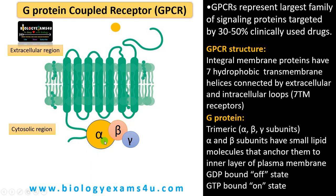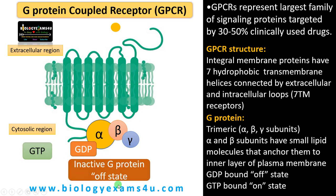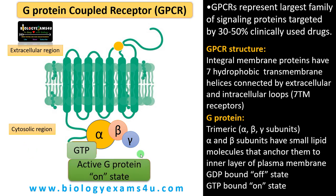The G protein is a trimeric protein consisting of three subunits: alpha, beta, and gamma. The alpha and beta subunits have small lipid molecules that help anchor them to the inner layer of the plasma membrane. When the alpha subunit is bound to GDP, the receptor is in an inactive or off state. On binding of a ligand to the receptor, this GDP is exchanged for GTP, and then the receptor becomes active or in the on state. Since these subunits bind to either GDP or GTP, this protein complex is called G protein.